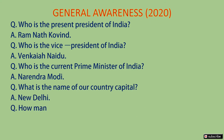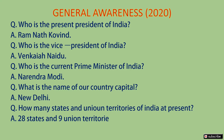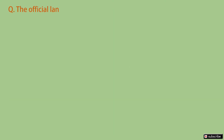And the fifth question is, how many states and union territories of India at present? And the answer is 28 states and 9 union territories. The official language of India is? And the answer is Hindi and English.